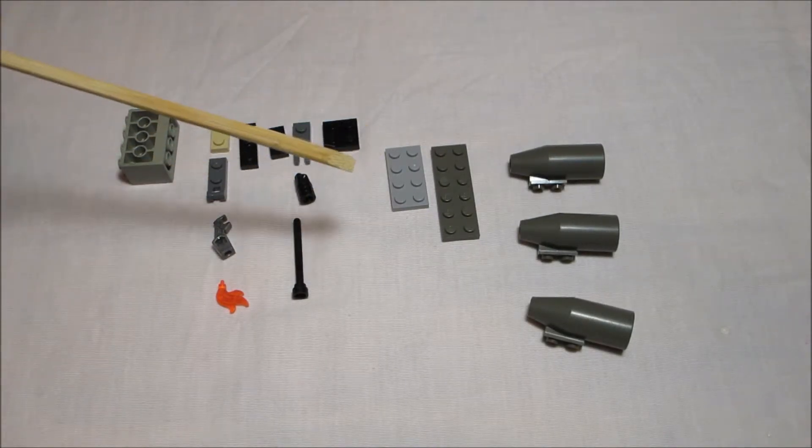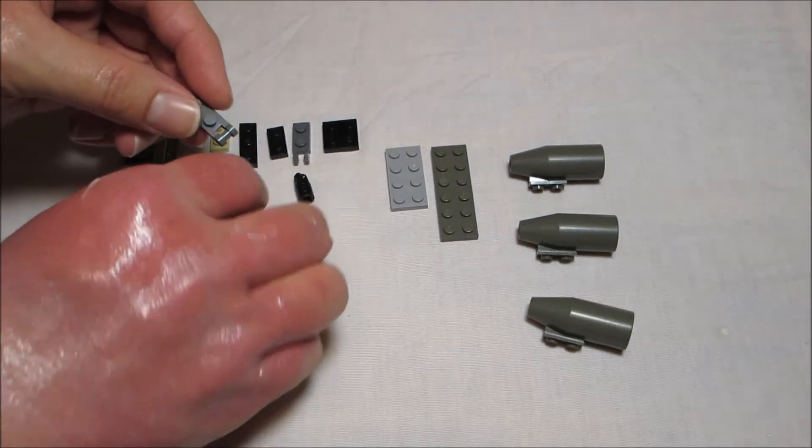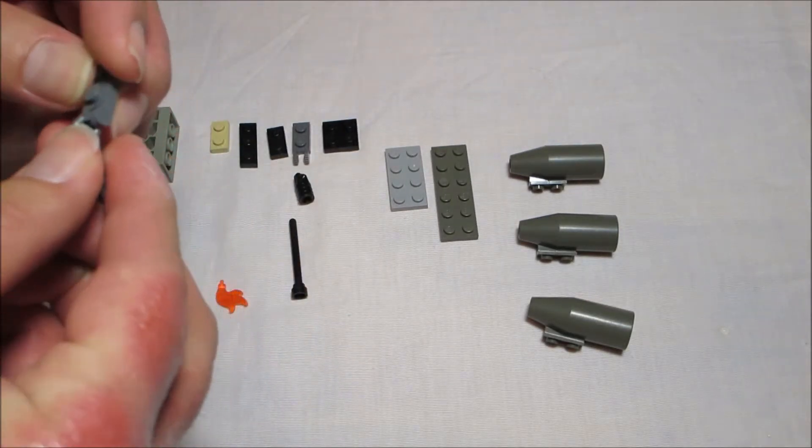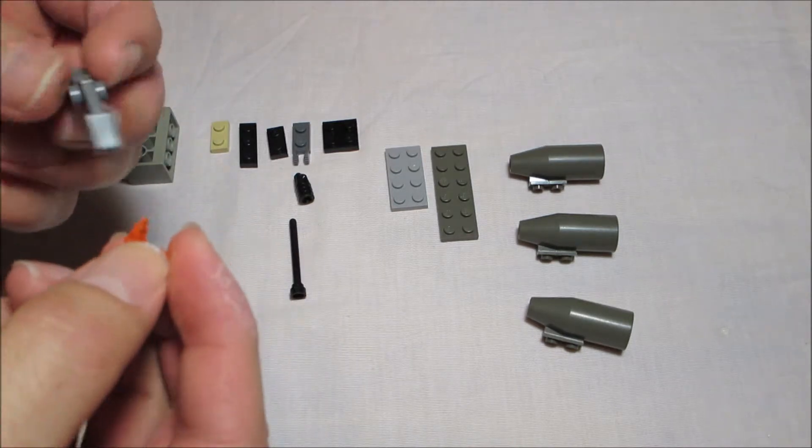Next we'll construct the rocket pod which is on the left hand side of the mech. We're going to start with a 1x2 plate with a clip. We're going to hook on that little arm there and put it in the flamethrower.